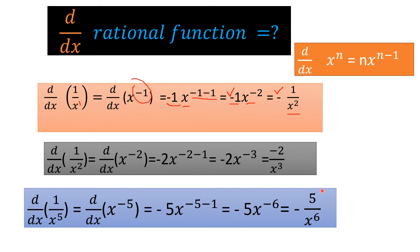Let's take another example: the derivative of 1 upon x squared. Rewrite it as d by dx of x power minus 2. Applying the power rule, minus 2 comes to the beginning: minus 2 multiplied by x power minus 2 minus 1, giving minus 2 x power minus 3. Taking x to the denominator, the answer is minus 2 upon x power 3. So the derivative of 1 upon x squared is minus 2 upon x power 3.